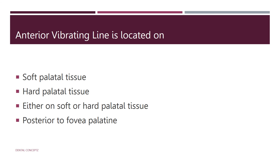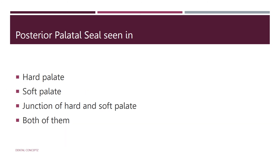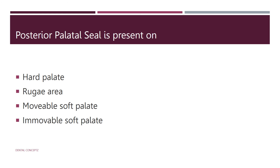The anterior vibrating line is always located on the soft palatal tissue. The postero-palatal seal is seen in the soft palate. When the posterior palatal seal is present, it is always present on the movable soft palate.